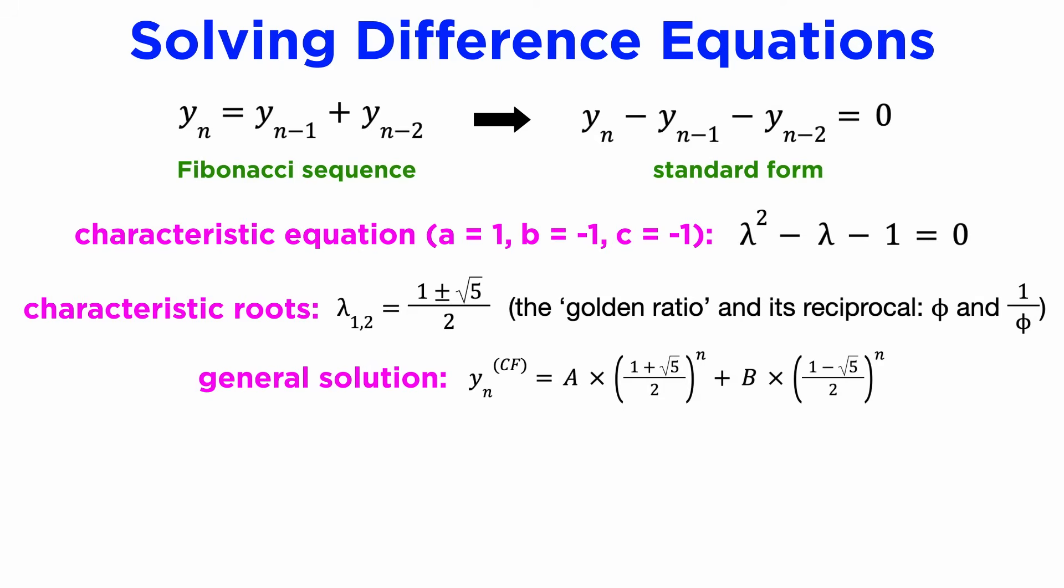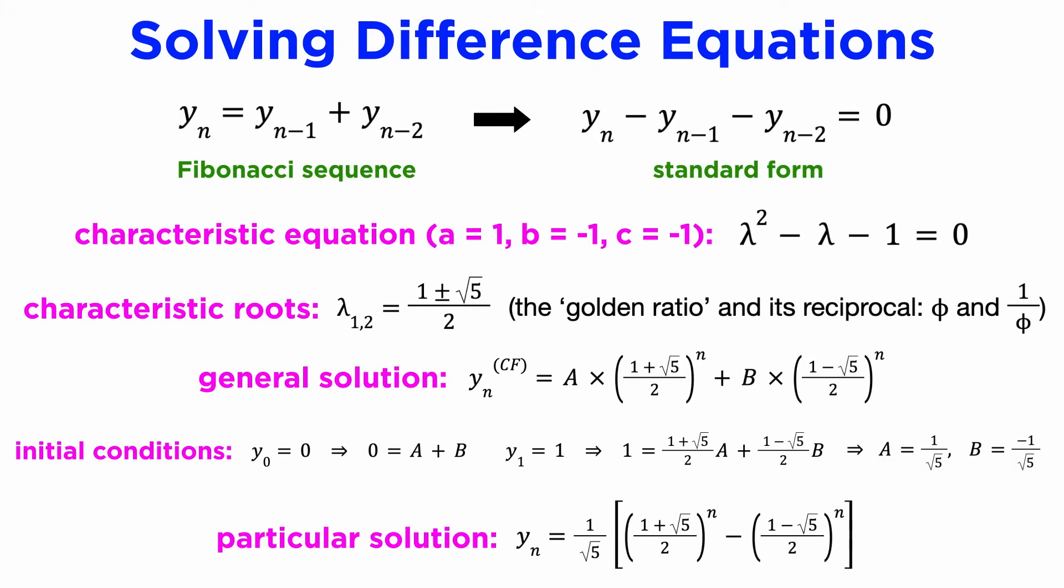Since our roots are real and distinct, we take the first solution case to get the general solution. All that's left to do is apply the initial conditions, y0 equals 0 and y1 equals 1, and solve for the constants a and b, and this yields our particular solution.